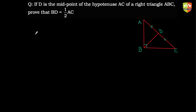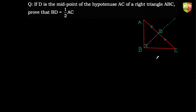Since the triangles containing BD don't directly help, we look outside the triangle. If BD equals half of some other side that equals AC, our purpose is solved. So the construction is: extend BD to point E such that DE equals BD, and join EC. Then BD automatically becomes half of BE, and if we prove BE equals AC, we are done.